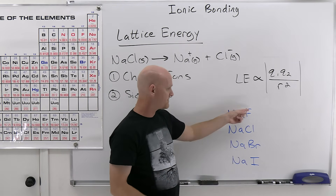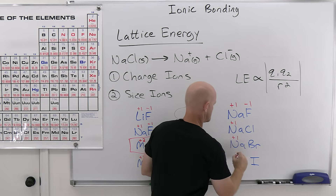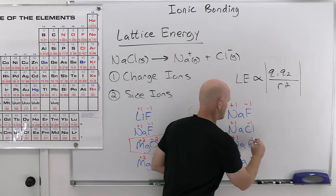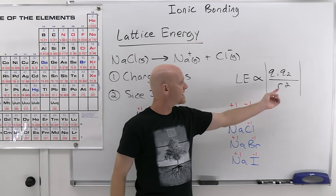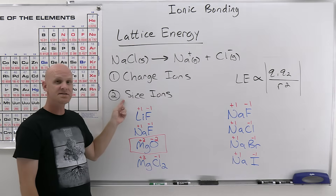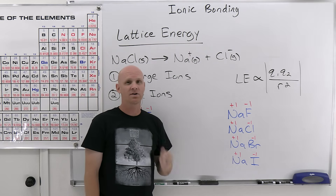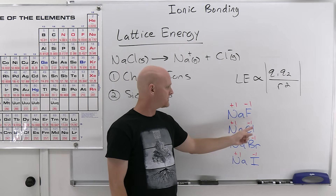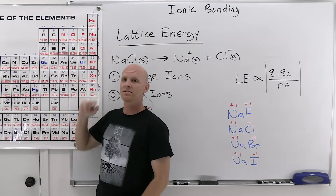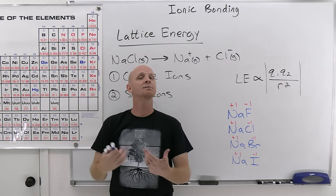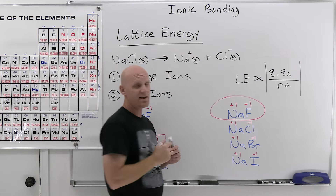In this next comparison — NaF, NaCl, NaBr, NaI — it's a sodium salt in every case with the charges all being +1/−1. So the difference comes down to the distance of separation, which depends on the size of the ions. The smaller the ions, the greater the lattice energy. Since sodium is common to all, it comes down to fluoride versus chloride versus bromide versus iodide. Fluoride is definitely the smallest, so sodium fluoride has the highest lattice energy out of those four.